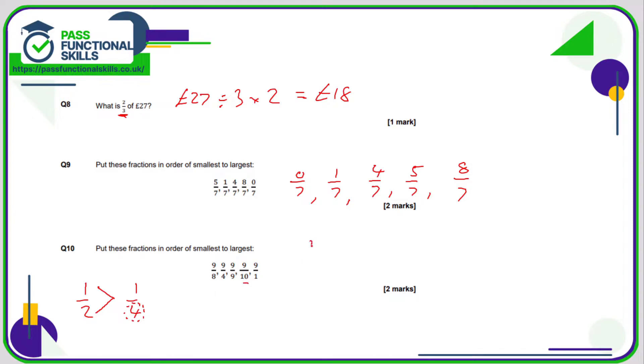So nine tenths is the smallest, nine ninths is the next smallest, nine eighths is the next smallest after that, then nine quarters, then the largest which is going to be nine over one.